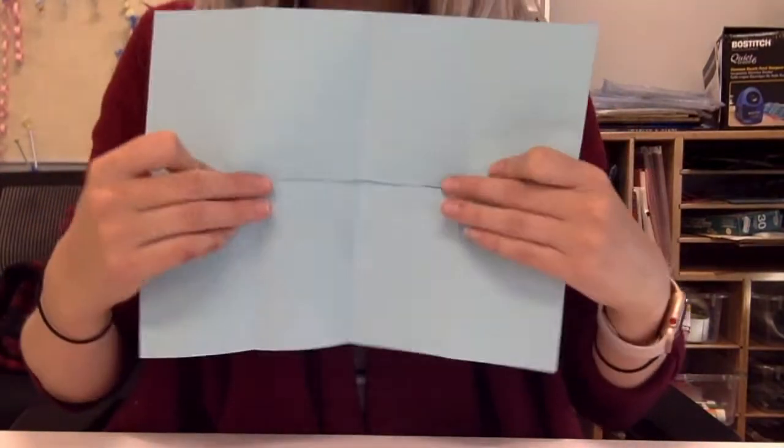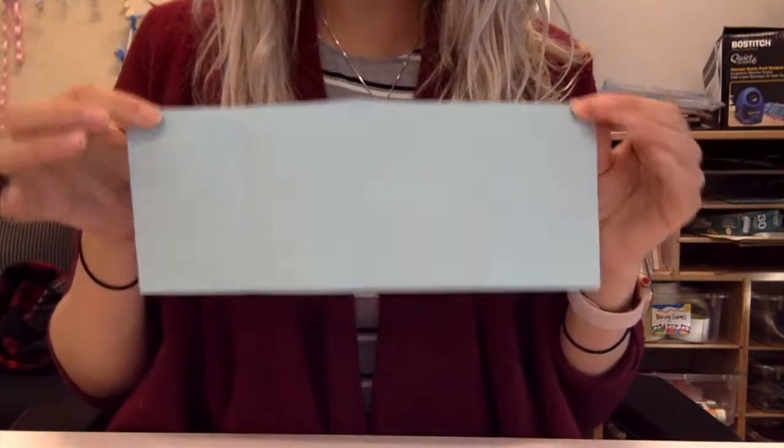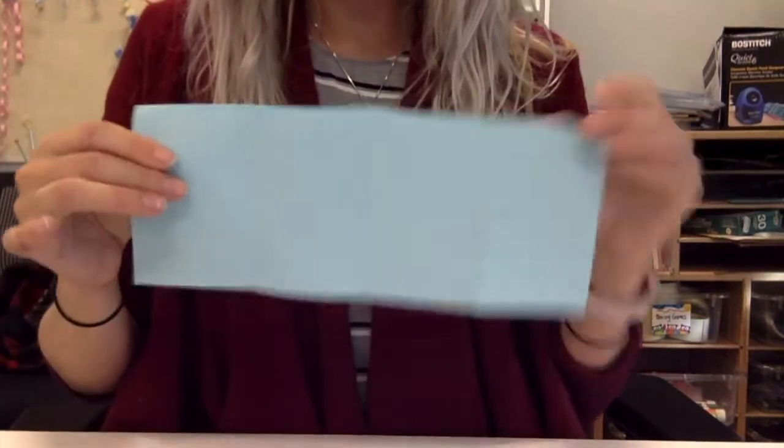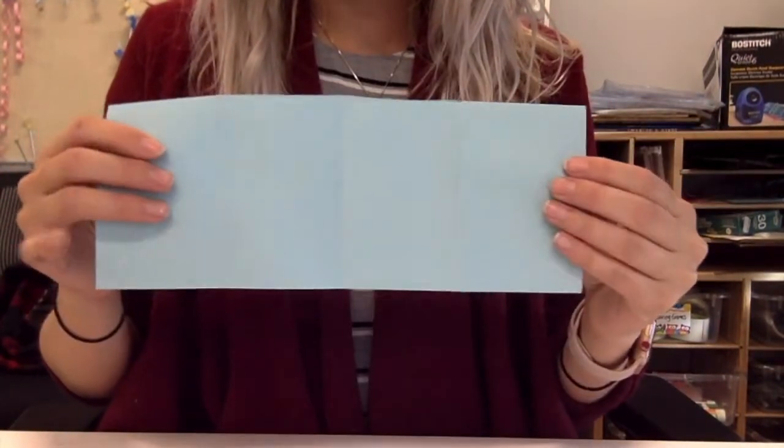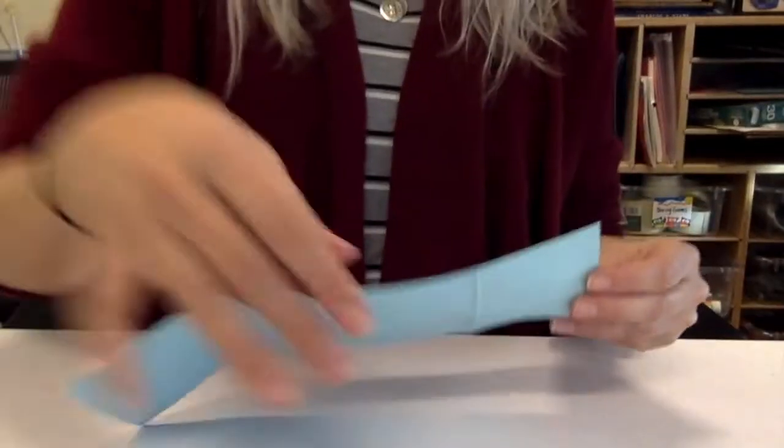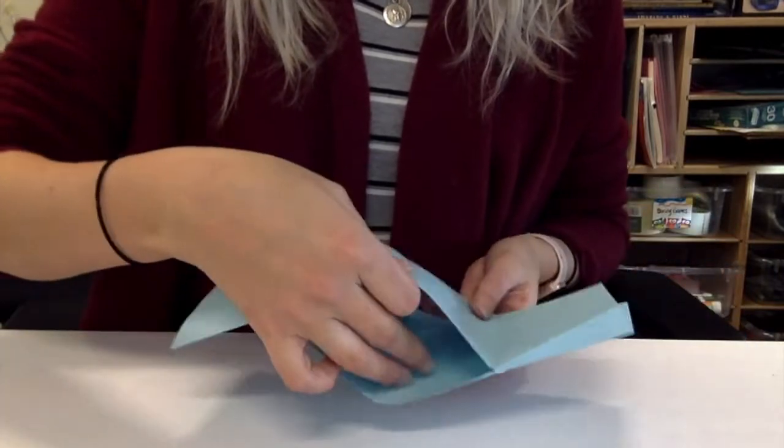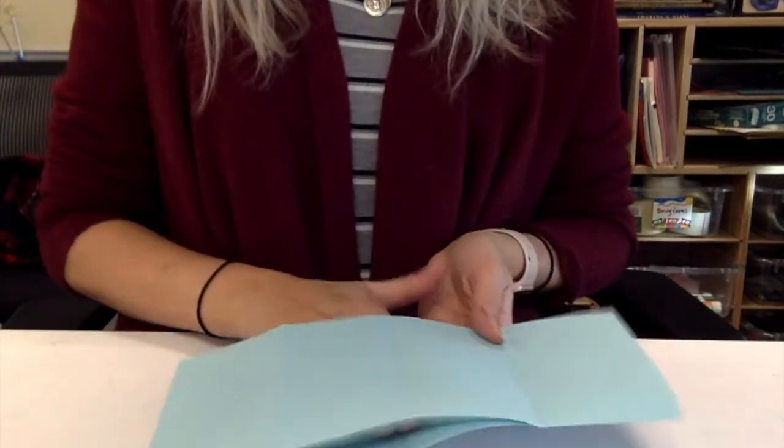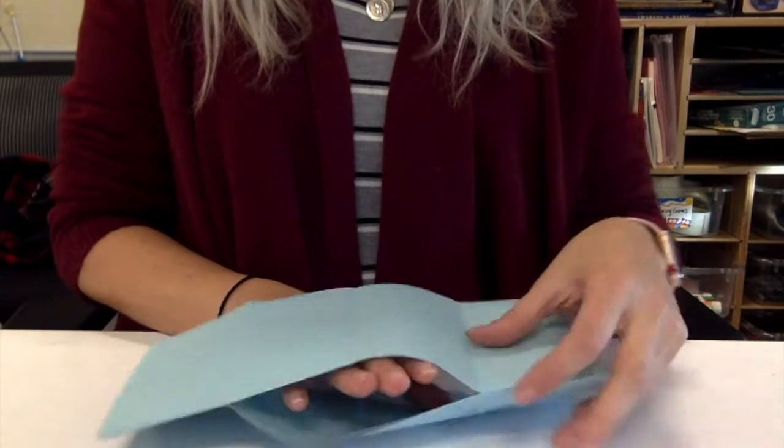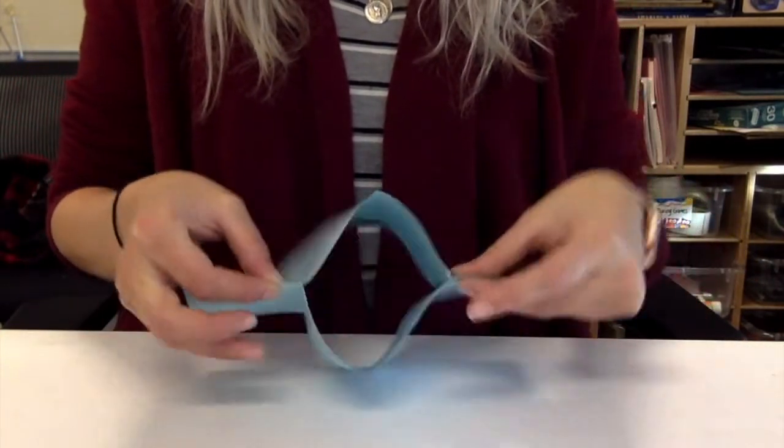Once you have done that, you can open it back up again. You'll see that there's a little cut in the middle. Then you're going to fold it back into hot dog style. From here, you will notice a gap in your paper. Open up the gap a little bit to get some space, grab both sides, and make your diamond.